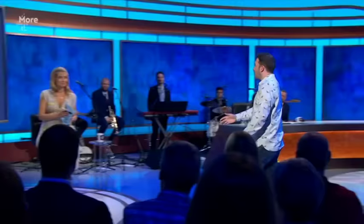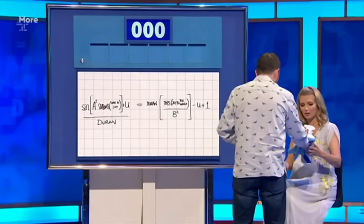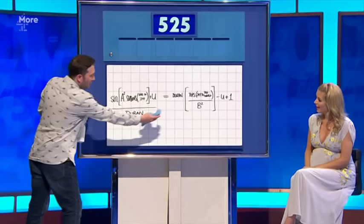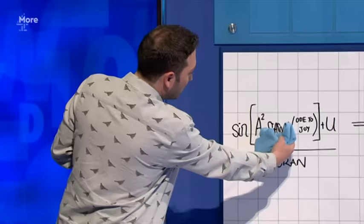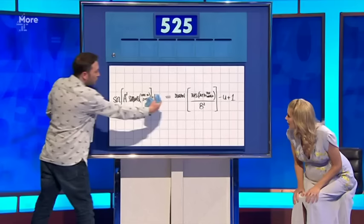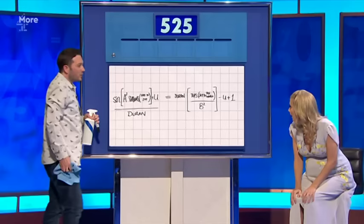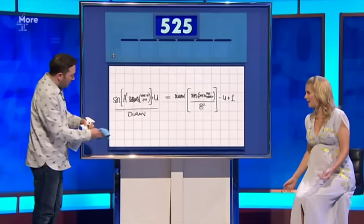Hello, Rachel. Hello. How are you? I've got this in my hand. Yes, this is all mine. I don't like to share. So where would you start here, Rachel, if you were tidying up this equation? Sine a squared seasons times by o to joy plus u, all over Duran, equals Duran multiplied by tops, brackets, joy to the world, all over b squared, or minus u plus one. You'd times by Duran, wouldn't you? That's what you do.